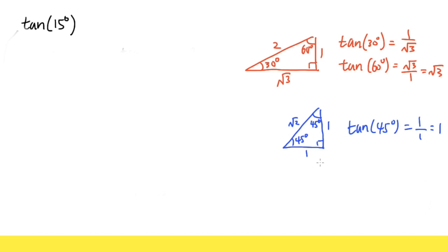We also have another special right triangle, the 45-45-90, and the ratio of the sides is 1-1-square root of 2. We can figure out tangent of 45 degrees — either angle is 45 degrees anyway — so it's 1 over 1, which is 1.